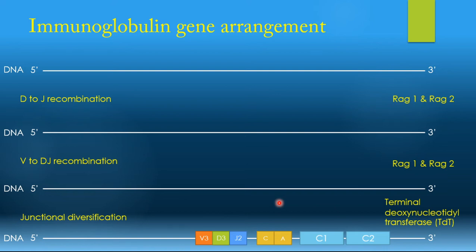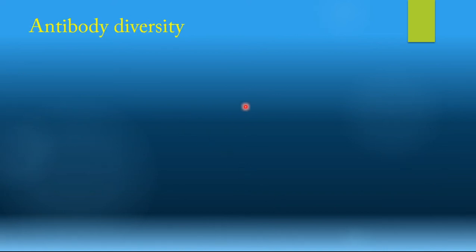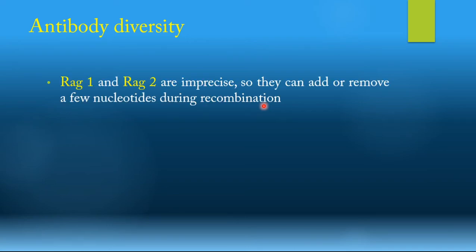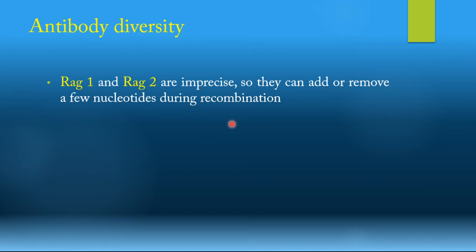Now let's talk further about antibody diversity — how does it really occur? RAG1 and RAG2 do the recombination, but they also do more than just recombination. RAG1 and RAG2 are actually very imprecise, and that is somehow beneficial for us. Because of their imprecision, they can add or remove a few nucleotides during recombination — removing nucleotides from the V, D, or J segments, or adding nucleotides — and this contributes to the diversity.